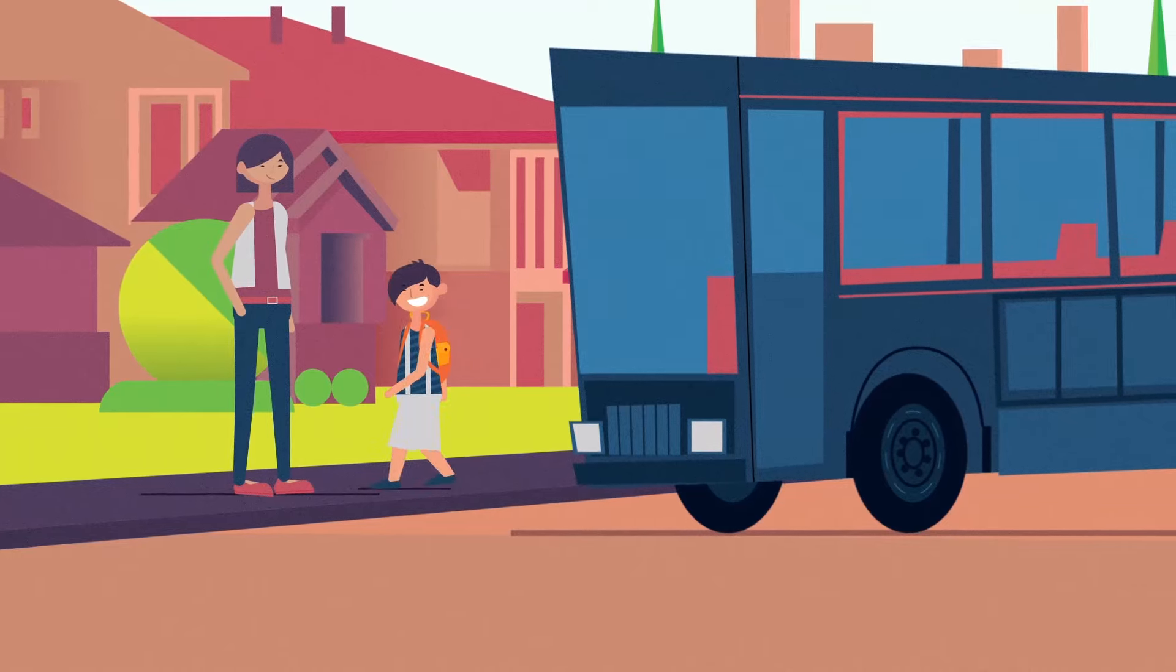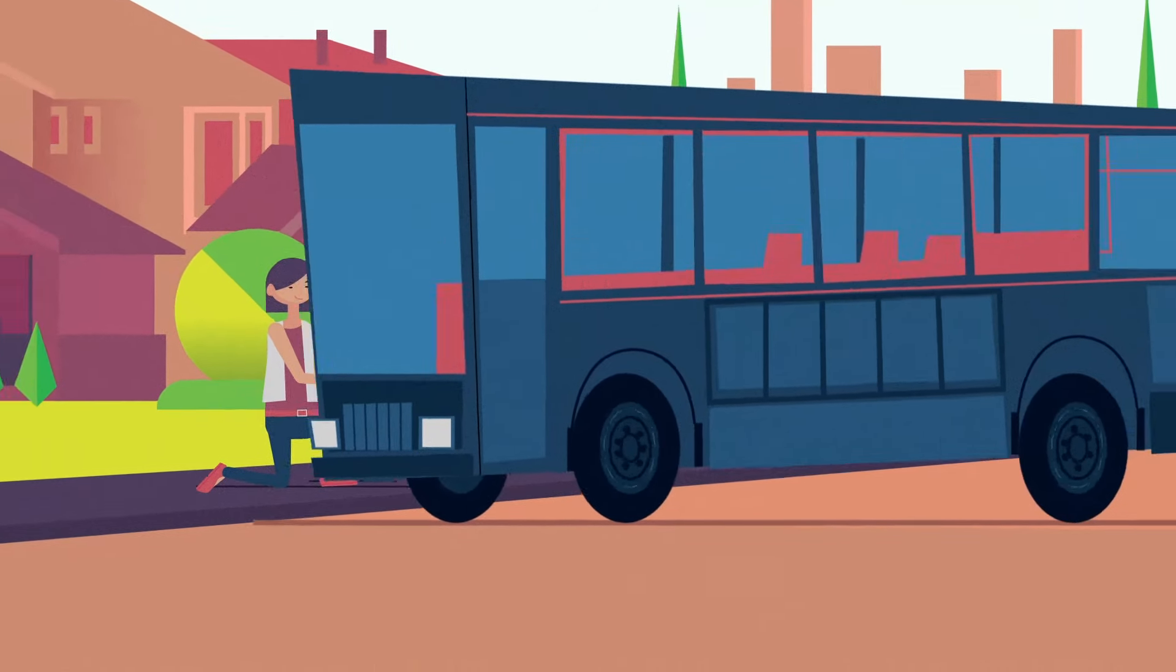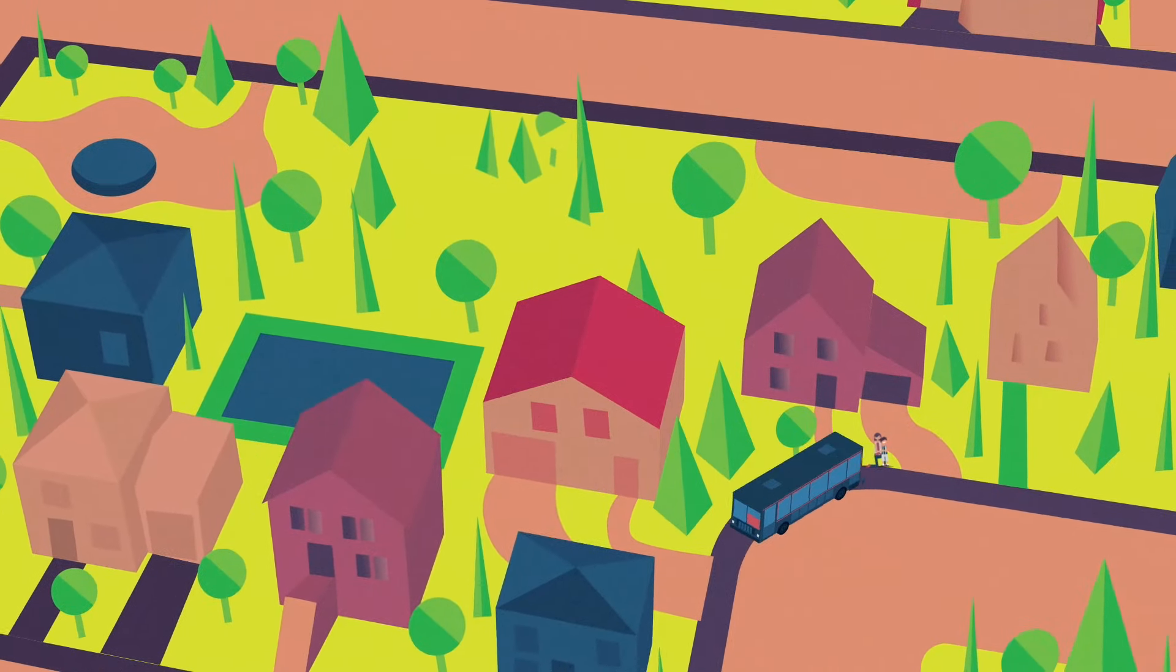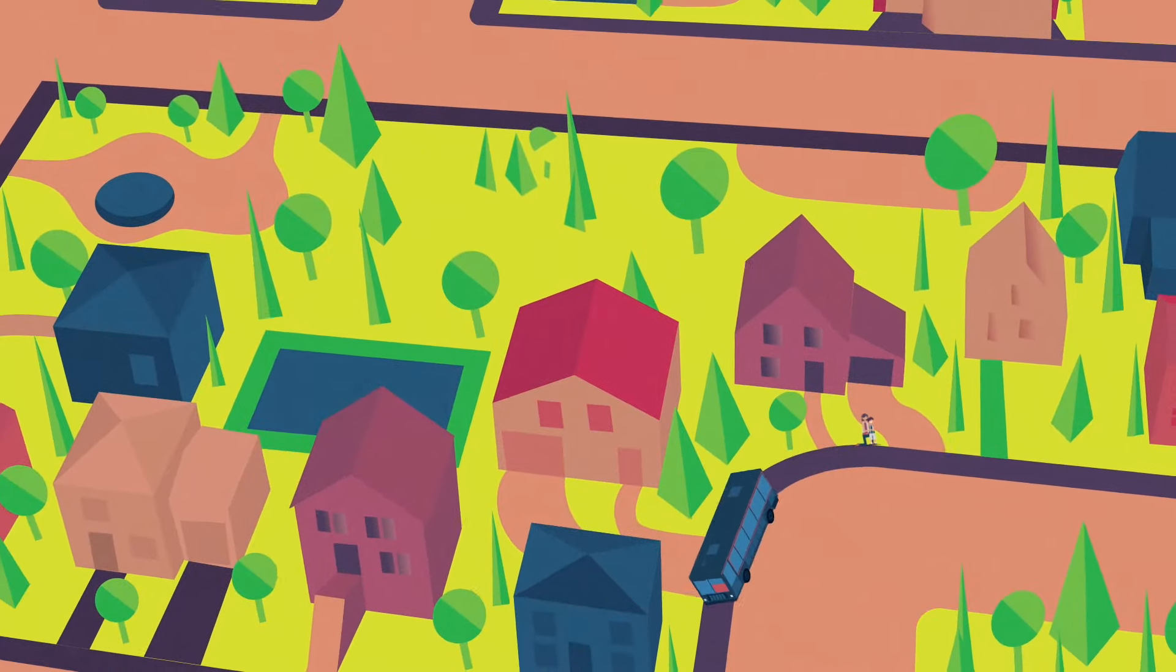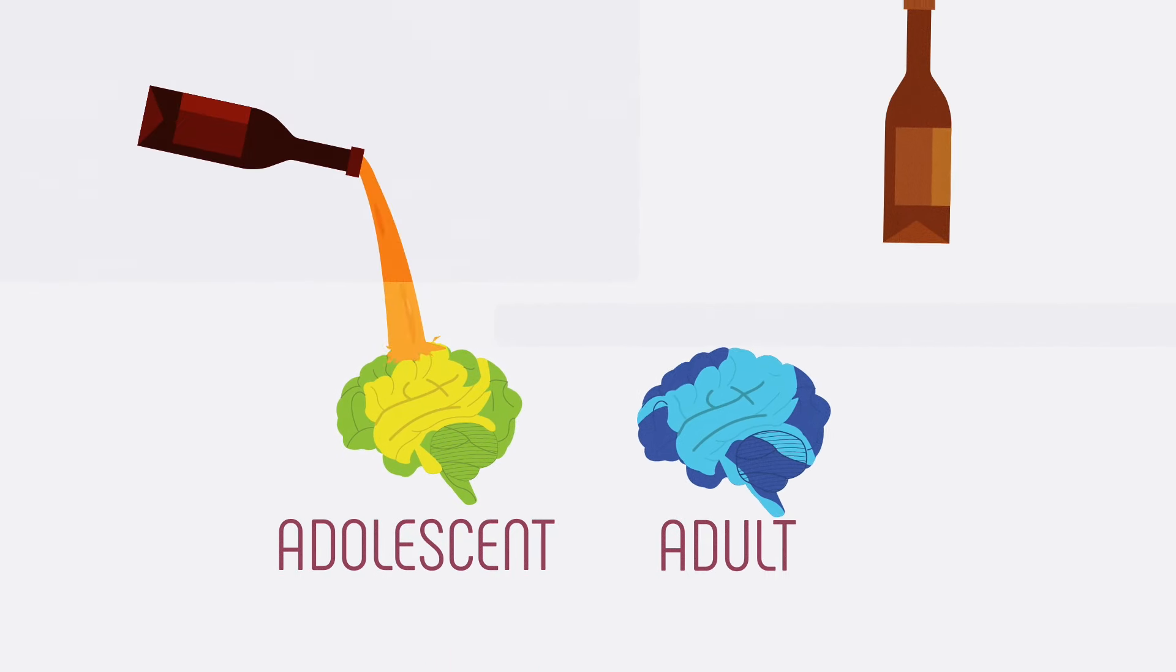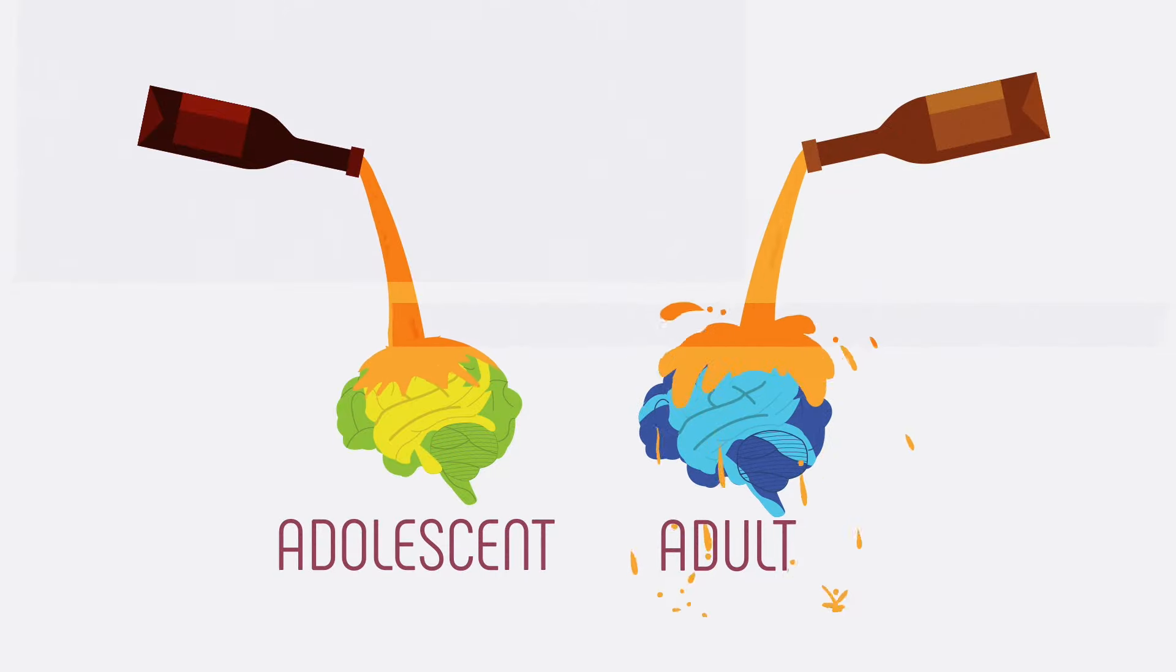All of us want to keep our kids and communities safe and healthy. An important step is to learn about preventing substance use disorders and to understand that the adolescent brain is more vulnerable to alcohol and drugs than the adult brain.